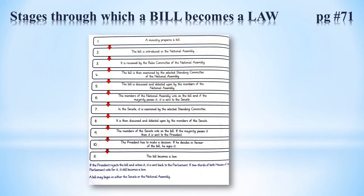Stage ten: The President has to make a decision. If he decides in favor of the bill, he signs it. President ke paas authority hoti hai ke woh isse pass kare ya nahi — agar woh pass karta hai to sign kar deta hai. Stage eleven: The bill becomes a law. Phir bill law ban jata hai. If the President rejects the bill and vetoes it, it is sent back to the parliament. If two-thirds of both houses vote for it, it still becomes a law.